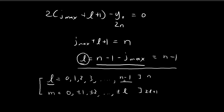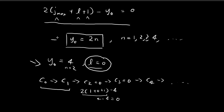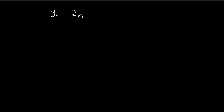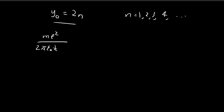Now, the boxed expression is super important because it gives us the allowed energy levels of the electron in the hydrogen atom. We've shown y₀ must equal 2n for the solution to be normalizable. Recall that y₀ is a shorthand for me² / (2π ε h̄² k) — a simplification introduced in the first video — and this must equal 2n. Note that k is related to the energy levels.